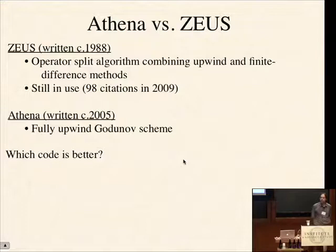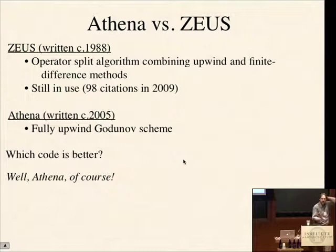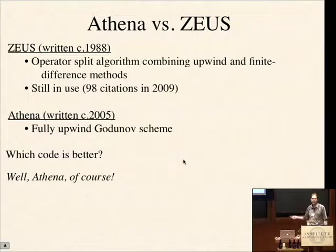How does Zeus compare to modern methods? We've described a simple method — is it something we should just forget about, an accident of history? We can answer that by comparing Zeus to a more modern, fully upwind method like Athena, which I'll describe starting today and in the next lecture. Which code is better? Well, Athena — because I spent many years developing it. But can we be more quantitative? First, I want to show you that Zeus is not hopeless for MHD.